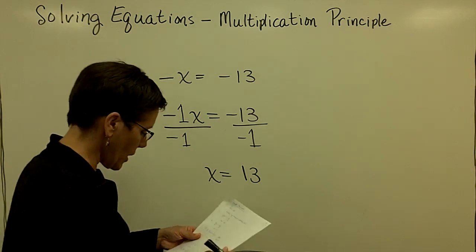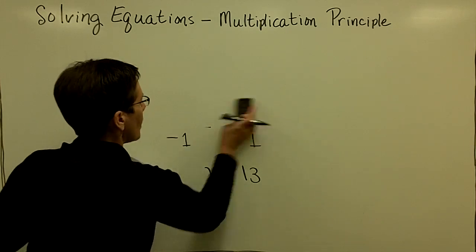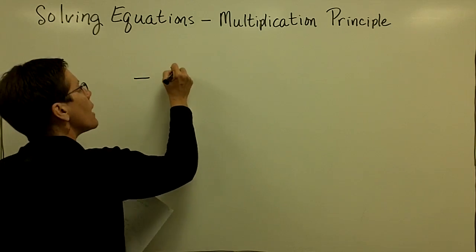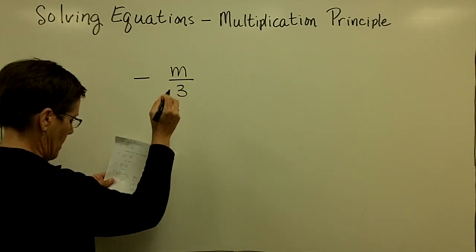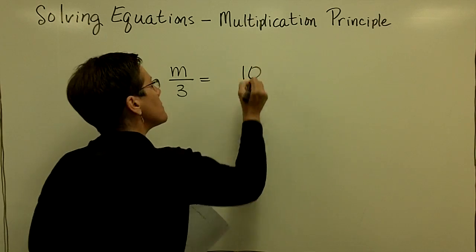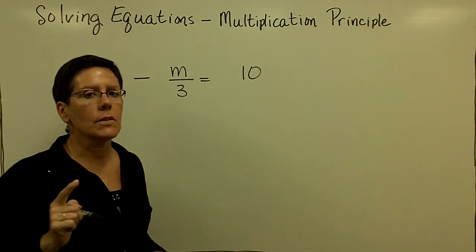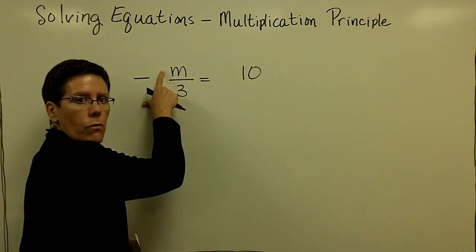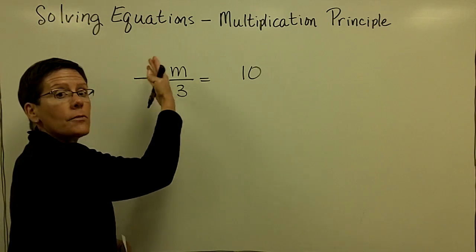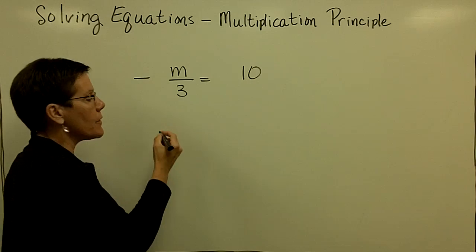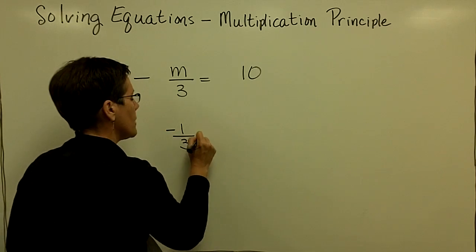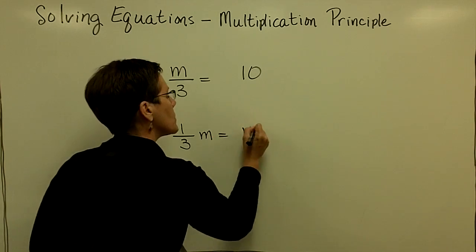I'm not going to take time to check that one. Let's look at one that involves a negative sign again. So a negative m over 3 equals 10. And so what I'd like you to recognize in this one, a coefficient right here of 1, with this being a negative 1 in front of that variable m.